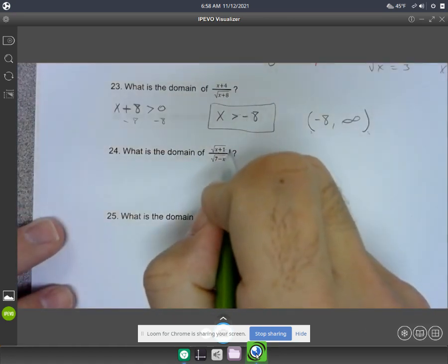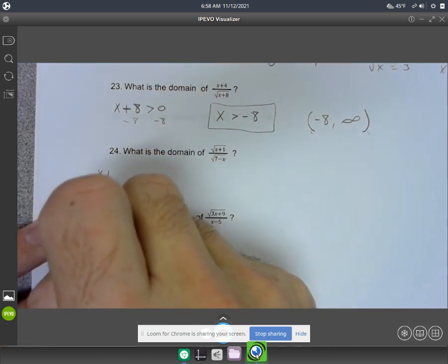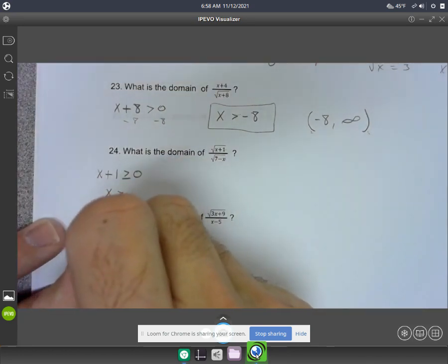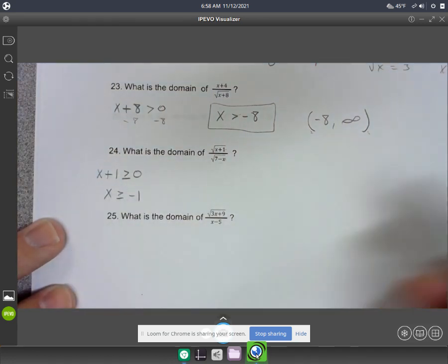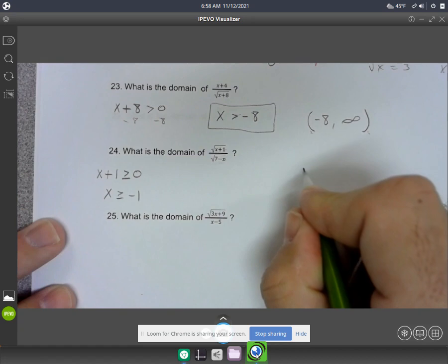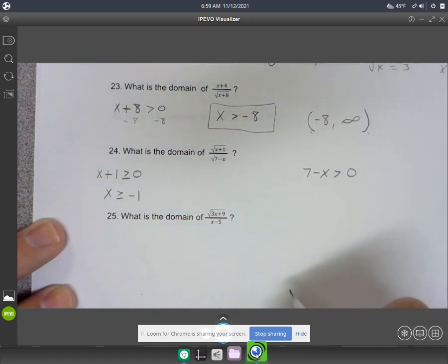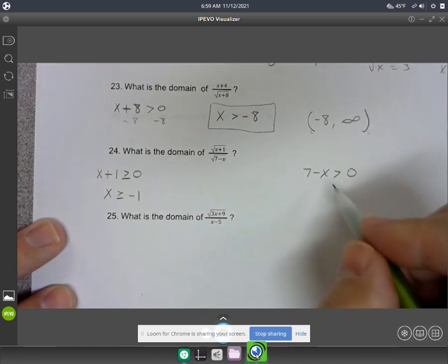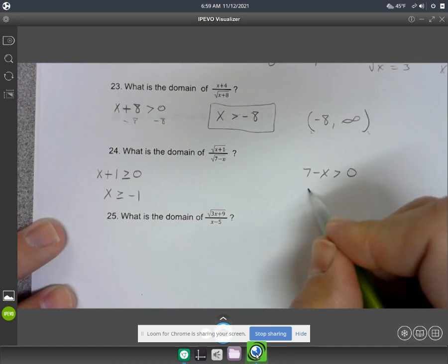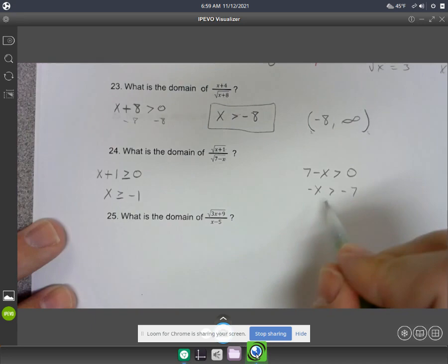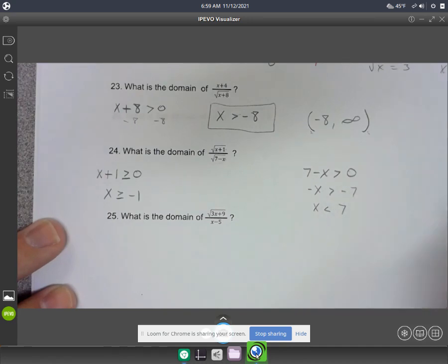What I would do is I'm going to take this x plus 1, and I'm going to say that has to be greater than or equal to 0. So x has to be greater than or equal to negative 1, just minus 1 from both sides. And then you'll take the 7 minus x, and you say that has to be greater than 0, not equal to. And then you solve this one. Move the 7 over. You get negative x is greater than negative 7. And then divide by negative 1, and you'll get x is less than positive 7.